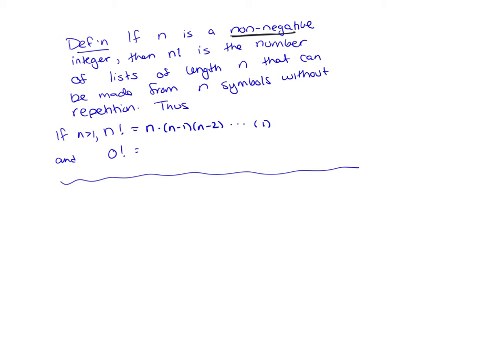And then 0 factorial, that one we have to think about. So 0 factorial should be equal to the number of lists of length 0 that can be made with 0 symbols. So let's see if we can draw a list of length 0. All right, I made one.